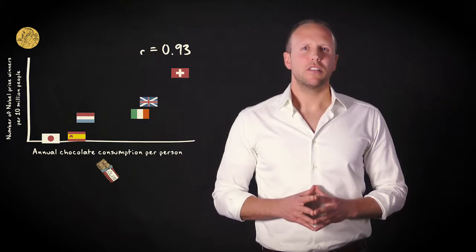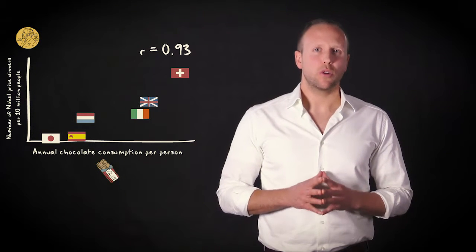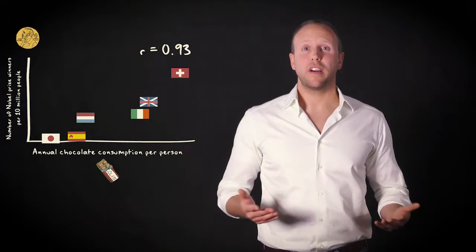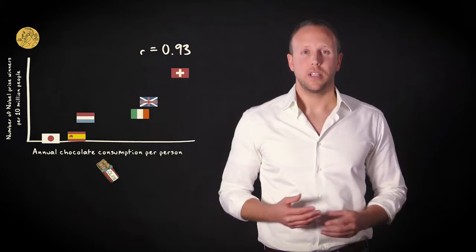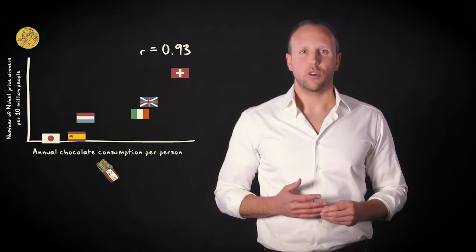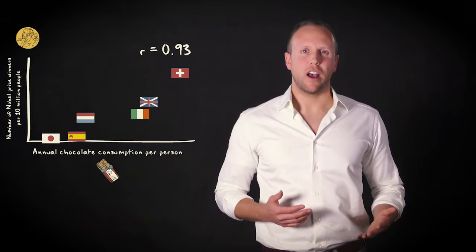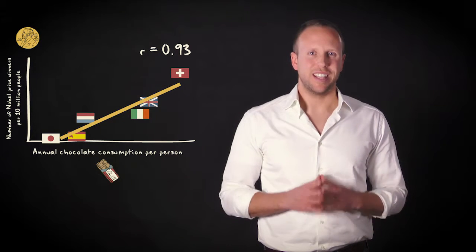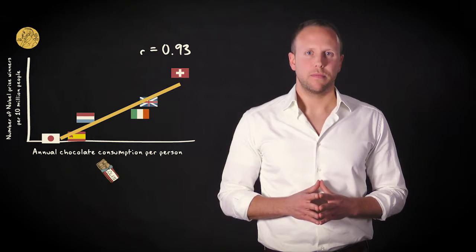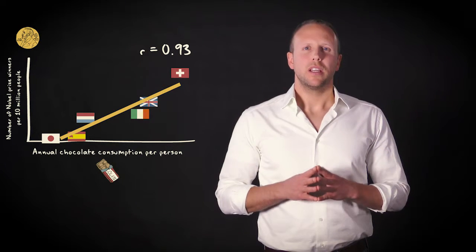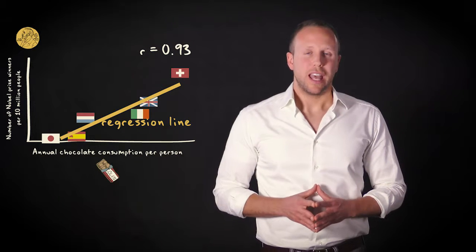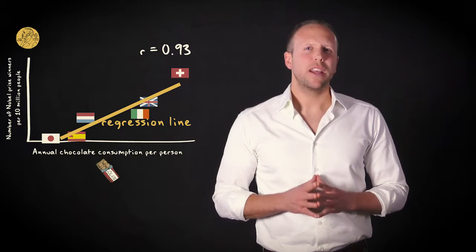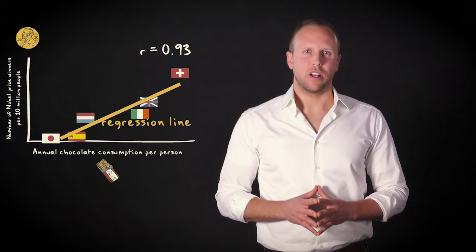The Pearson correlation coefficient tells you how strong the linear correlation between two continuous variables is. This linear correlation can be displayed by a straight line — in our case, that's this line. This is what we call the regression line, and in this video I'll tell you how we can find the regression line.